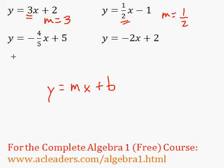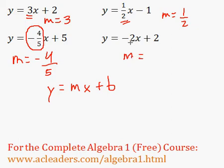Over here, the slope is negative 4 over 5, because again, that's the number multiplying x. And over here, the slope is negative 2. As easy as that. That's it.